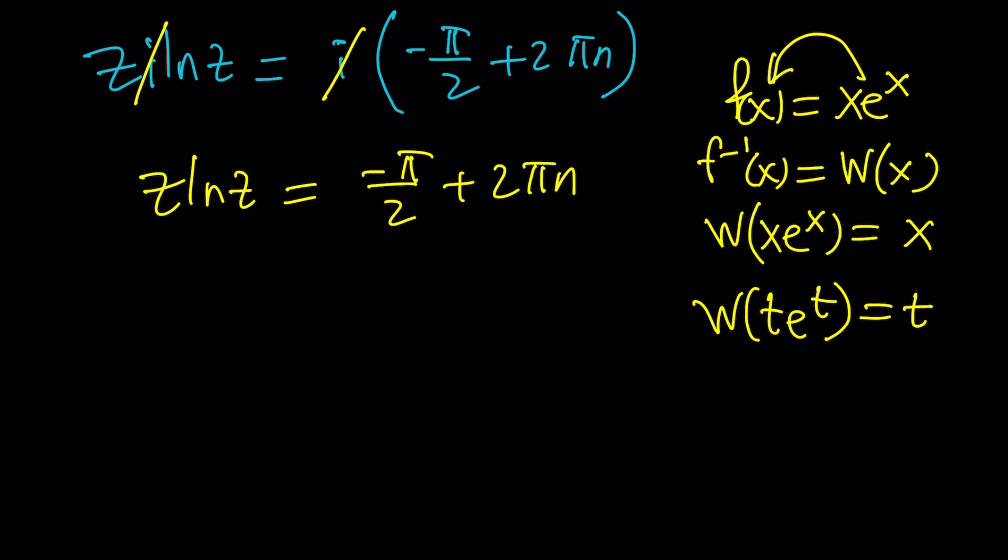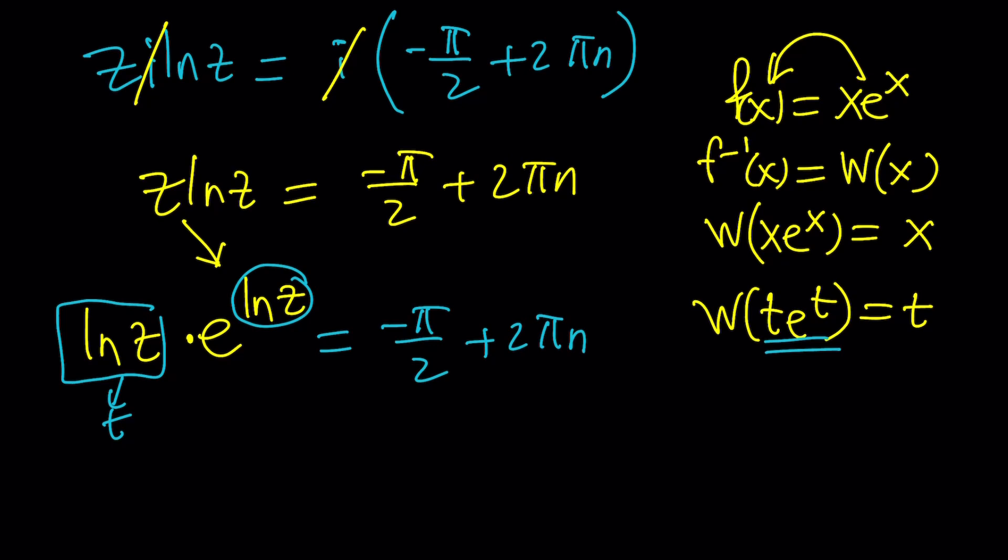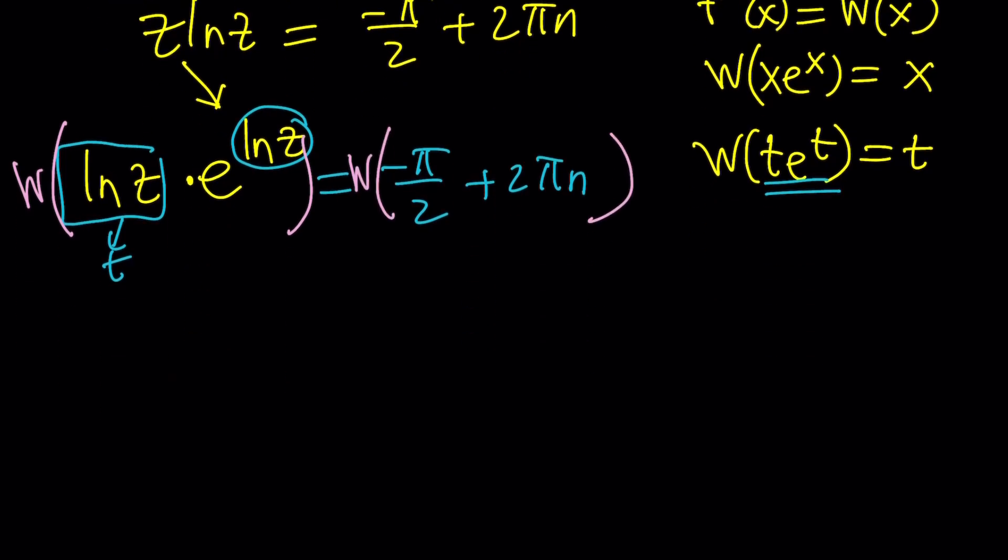Let's go ahead and do this. I want to write the left-hand side as ln z times e to the power ln z because z is e to the ln z, right? Now this kind of gives me my t to the t because this is going to be my t and this is going to be my e to the t. And now I can go ahead and apply the W on both sides. If I apply W here and here, the left-hand side just becomes t which is ln z and the right-hand side just stays as W something.